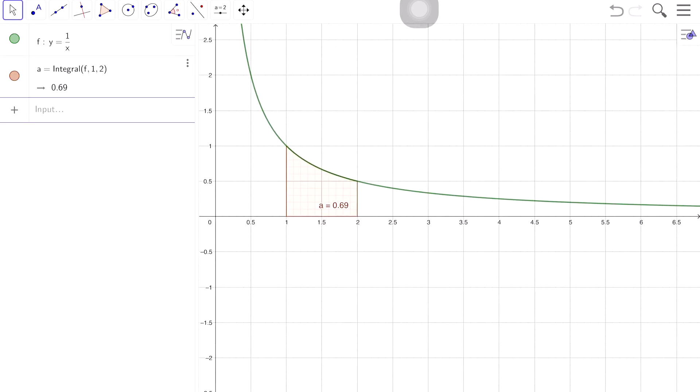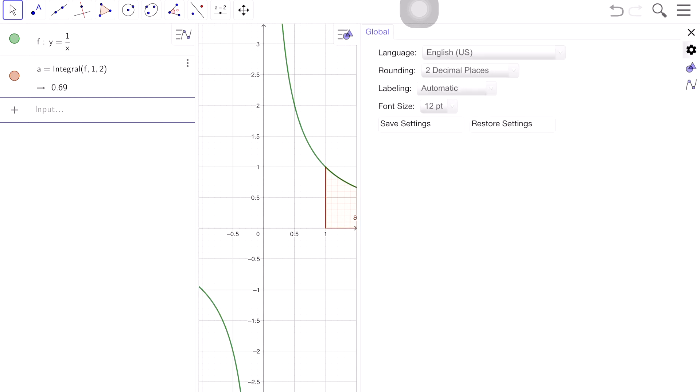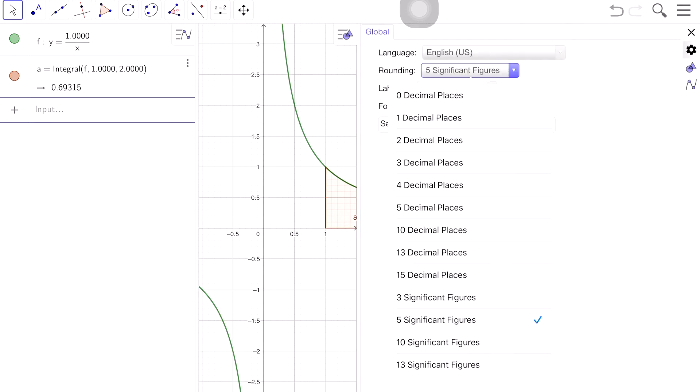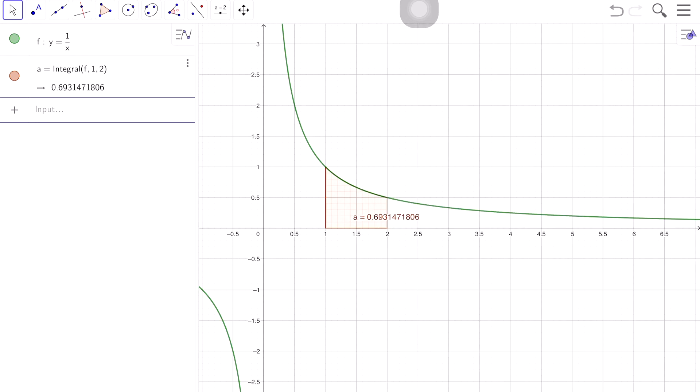And if you notice, that gives you about 0.69, which is fairly accurate. Let's see if I can change to decimal places. Oops. That's not what I wanted. I wanted, say, 10 decimal places. 0.6931471806, which is fairly close. So we are accurate to 2 decimal places, but no longer to 3 decimal places with our approximation.